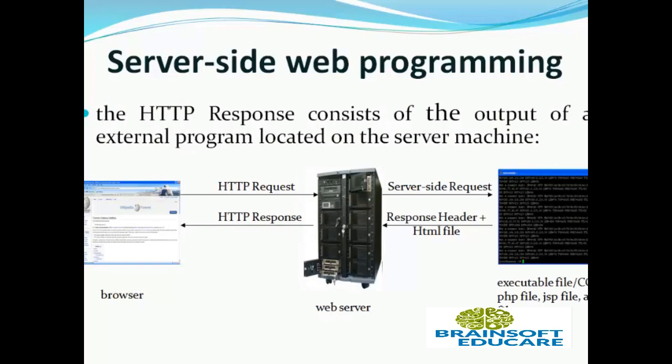The three main topics are browser, web servers, and CGI code or a CGI file. The HTTP response consists of the output of an external program located on a server machine. Here we can see an HTTP request goes from the browser to the web server, and the web server sends a request to the CGI file or CGI code. In return, the CGI program responds with a header plus HTML file to the web server, and an HTTP response goes back to the browser.